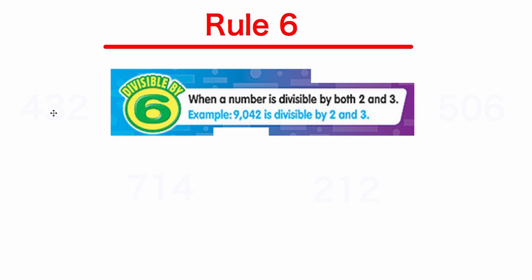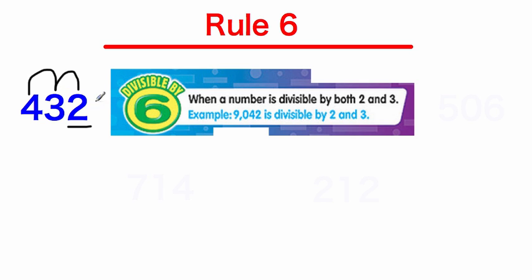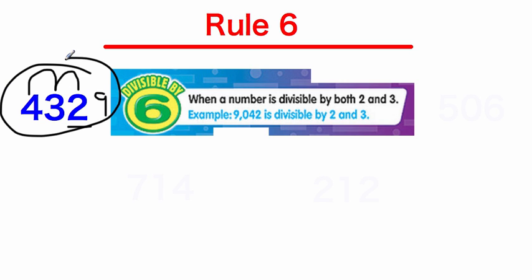Let's try some examples. Here's 432. Is it divisible by 2? Yes, it ends in an even number, 2. Is it divisible by 3? Adding the digits: 4 plus 3 is 7, plus 2 is 9. Can 3 evenly go into 9? Yes. So since 432 is divisible by both 2 and 3, it is divisible by 6.